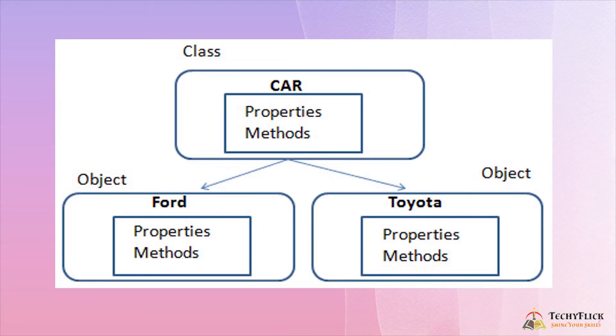This is an example diagram for objects and class. Consider a class as a car. It has its own properties and methods. Car has two objects, that is Ford and Toyota. Ford has its own properties and methods. Toyota has its own properties and methods. So by the definition, we can come to a conclusion that the collection of objects is called a class.